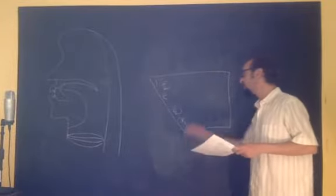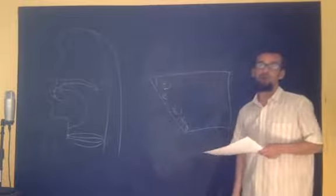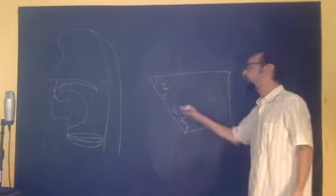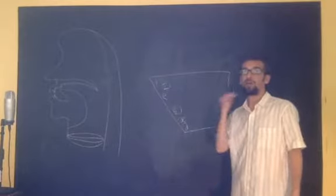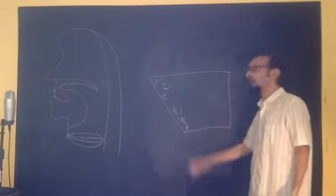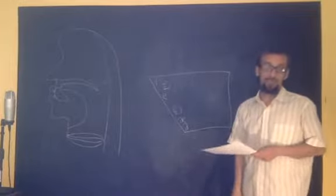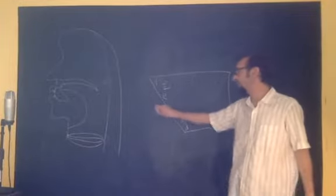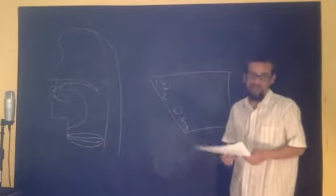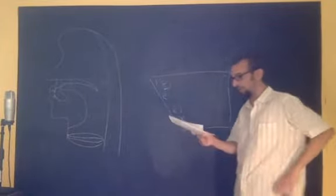The claim is that for languages that don't have these duration or lax-tense distinctions, or ATR distinctions, or whatever kind of distinctions you want to imagine, for languages that don't have those and only have height, three levels is the maximum. You can only have high, mid, and low.